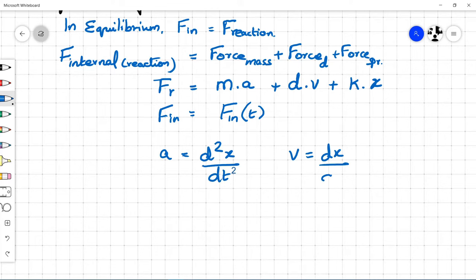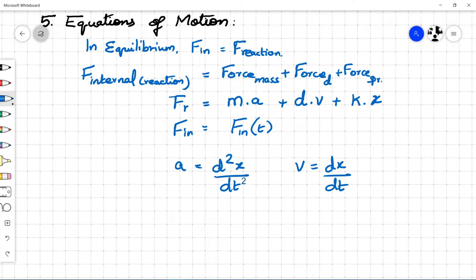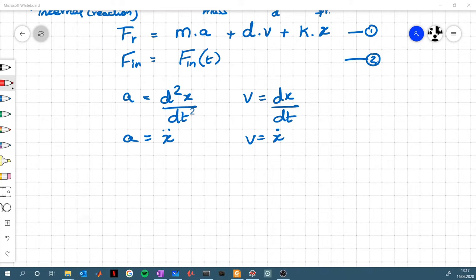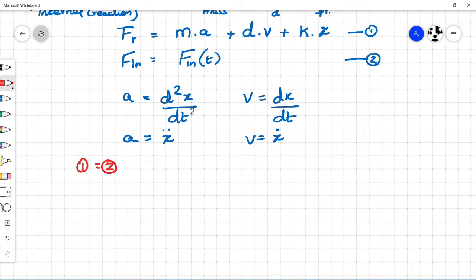Acceleration is d²x/dt² and velocity is dx/dt. In other words, a equals x double dot and v equals x dot. Let's consider the equations FR and Fin as 1 and 2.